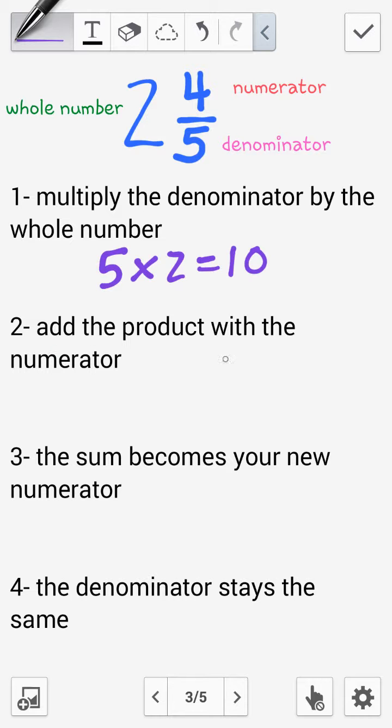Step 2, add the product with the numerator. The product is 10 and the numerator is 4. So I add those together and I end up with 14. Take that sum and it becomes your new numerator. So 14 goes at the top of the fraction bar.